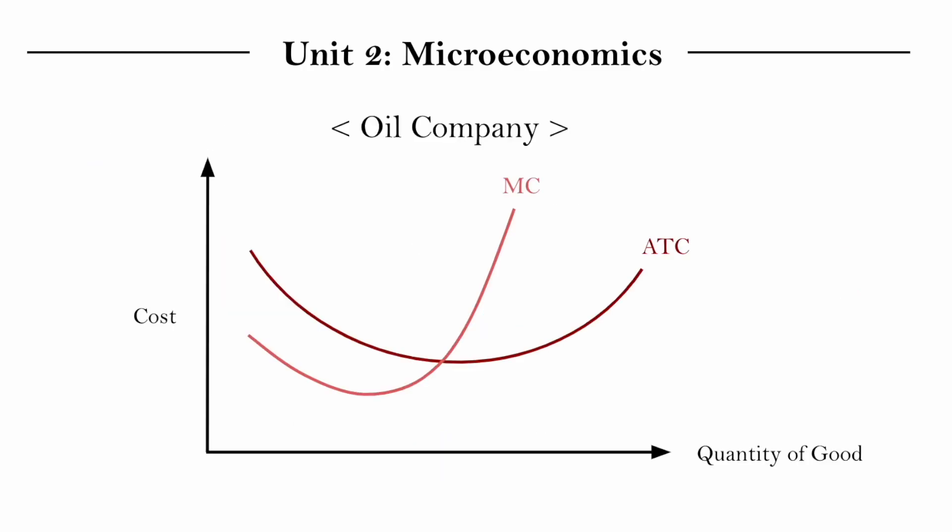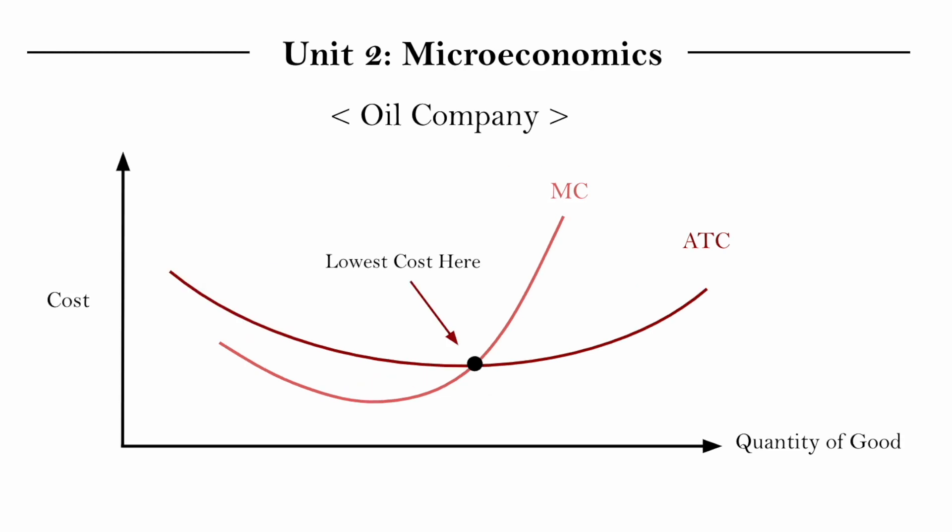If we look at this on our market diagram, that minimum point where MC crosses ATC, where we have our lowest average cost of production, in the natural monopoly occurs at a very large quantity. So it makes sense to have fewer firms producing at larger quantities so that we can be producing at a lower price.